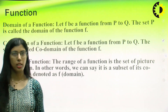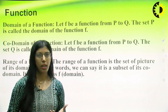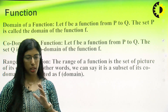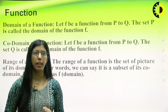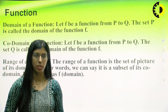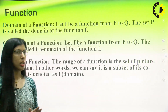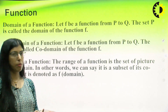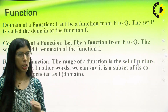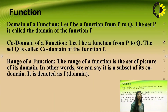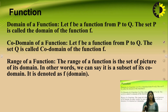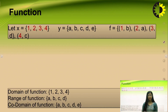Domain of a function: for example, let F be a function from set B to set Q. Then the elements of set B are known as the domain of the function. Co-domain of a function will be the elements of set Q. The range of a function defines the subset of its co-domain. Let us see this with an example.